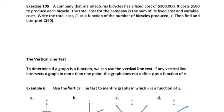Next we're going to look at exercise 105 from the end-of-section problems because there's going to be a similar problem in your homework. It says: a company that manufactures bicycles has a fixed cost of $100,000 and it costs $100 to produce each bicycle. The total cost is the sum of its fixed cost and variable cost. Write the total cost C as a function of the number of bicycles produced, x.